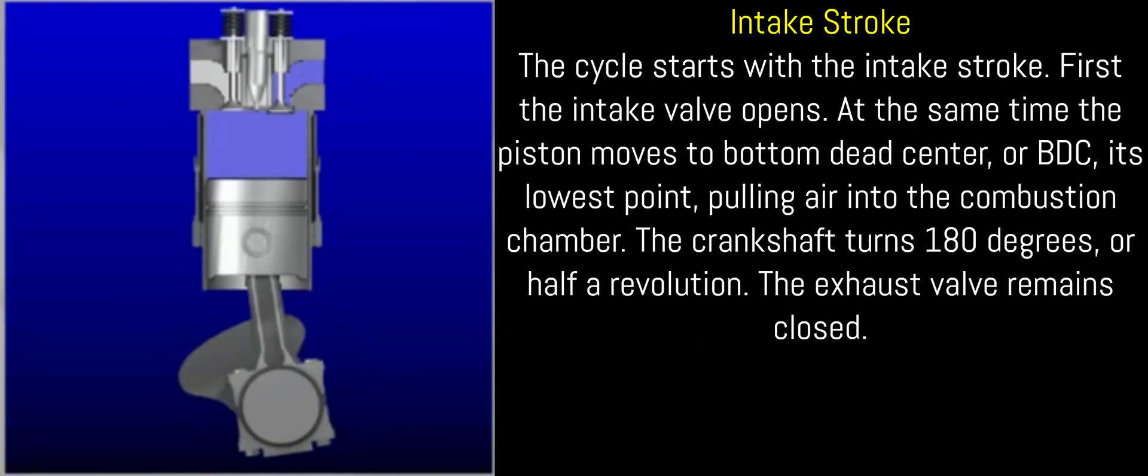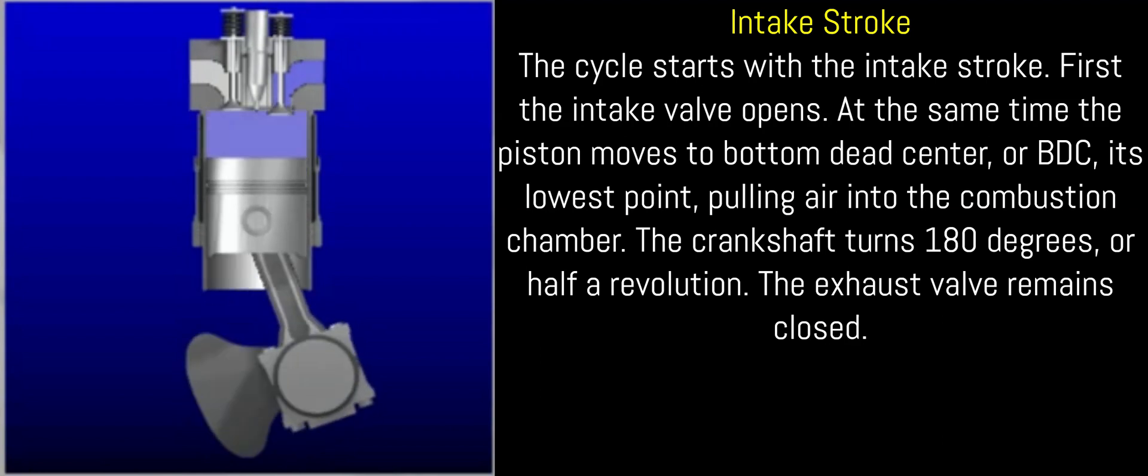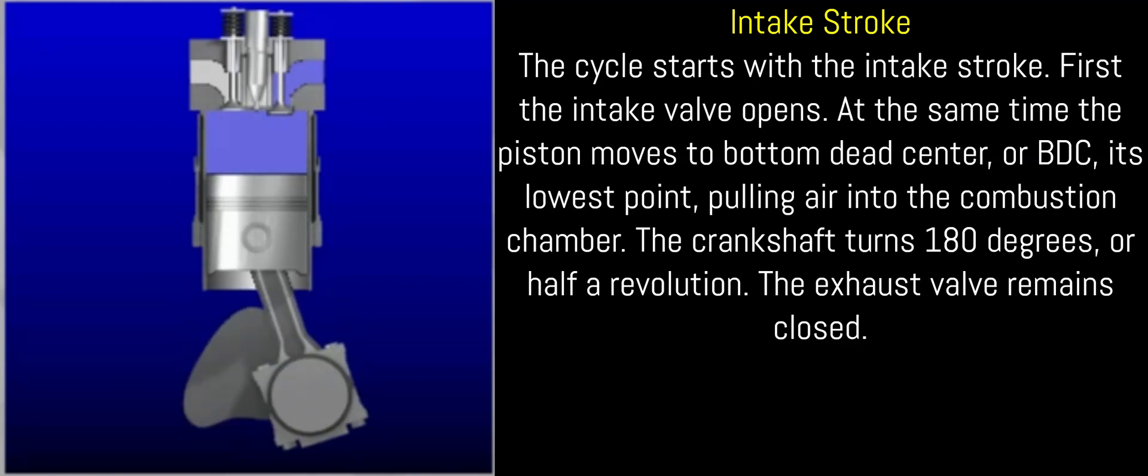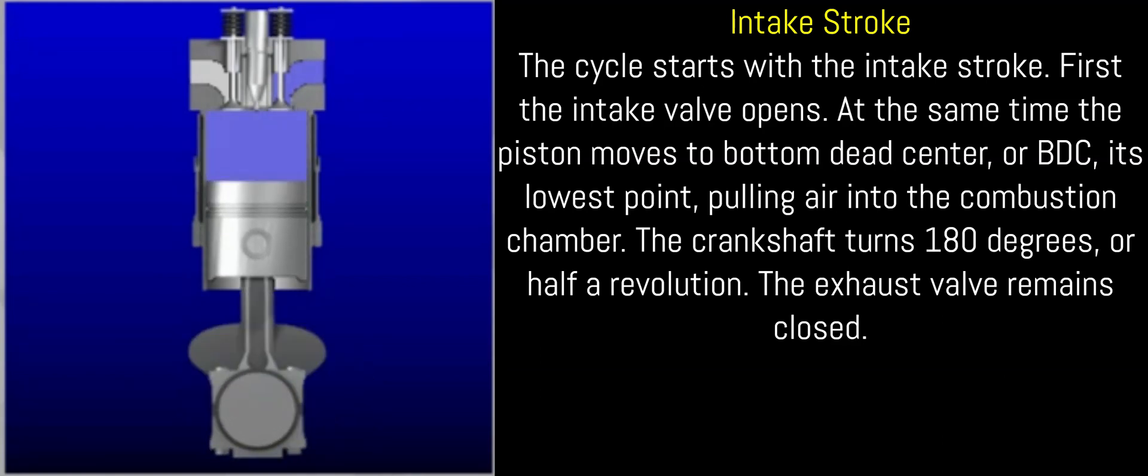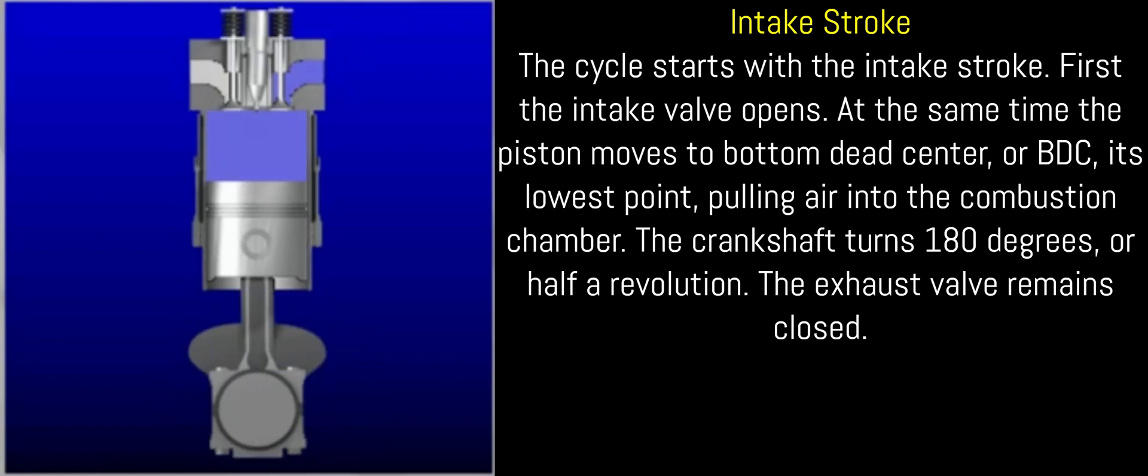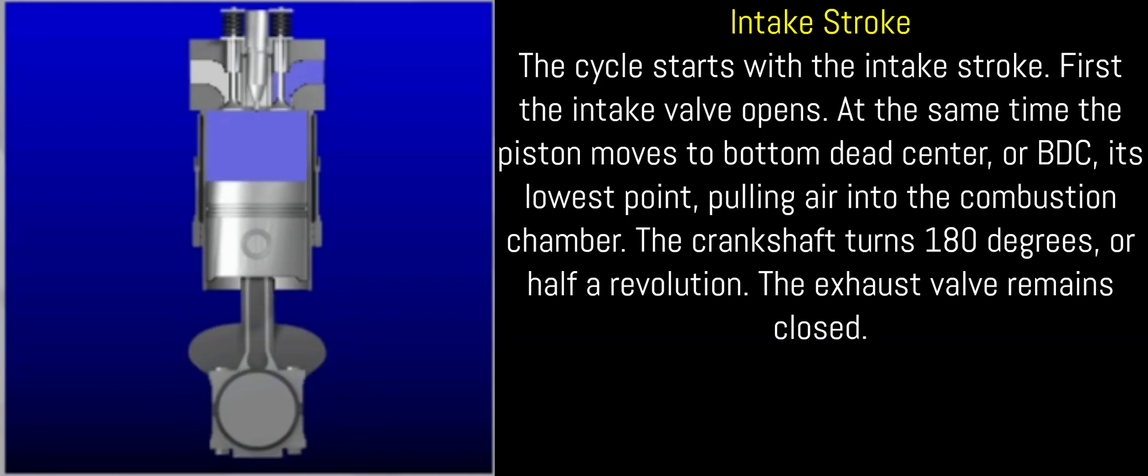Intake stroke: The cycle starts with the intake stroke. First, the intake valve opens. At the same time, the piston moves to bottom dead center, or BDC, its lowest point, pulling air into the combustion chamber. The crankshaft turns 180 degrees, or half a revolution. The exhaust valve remains closed.